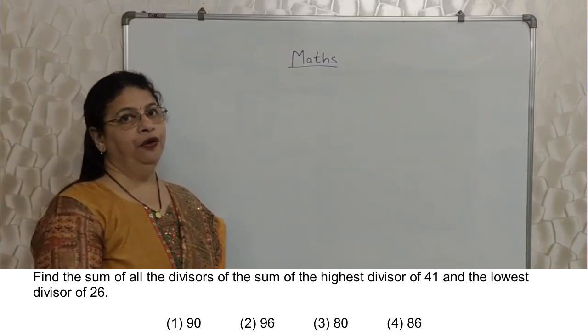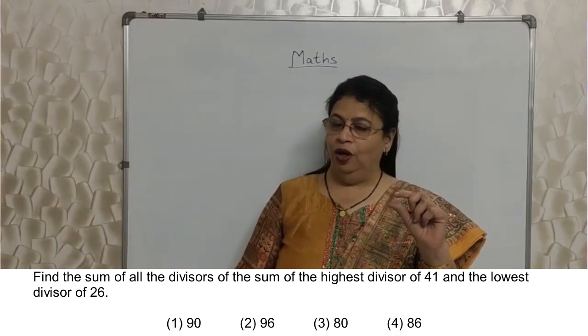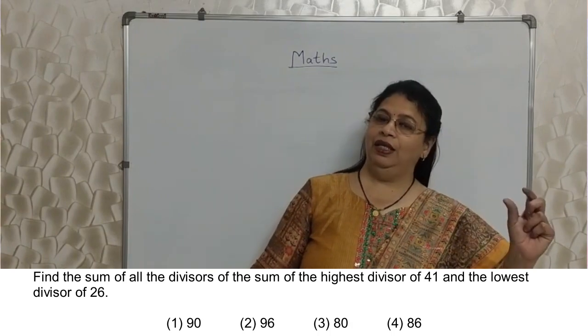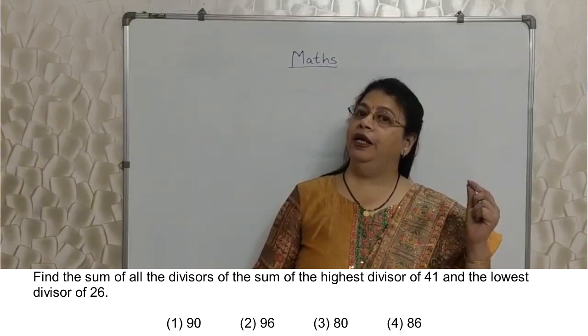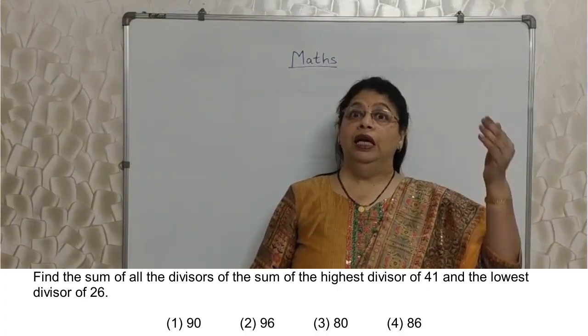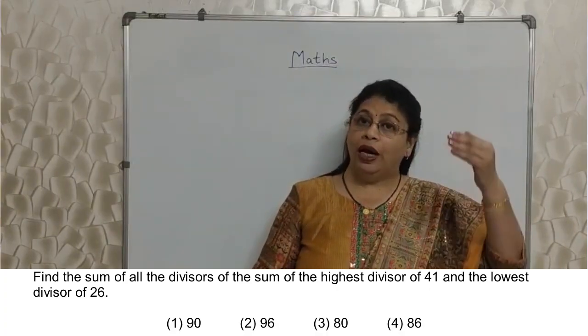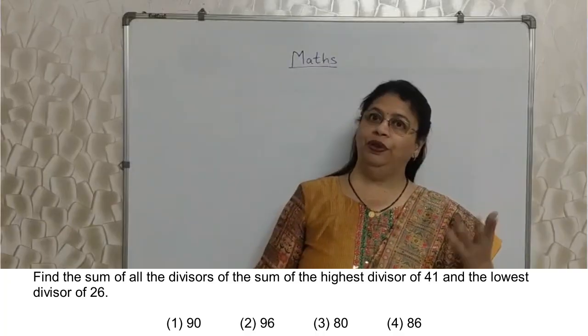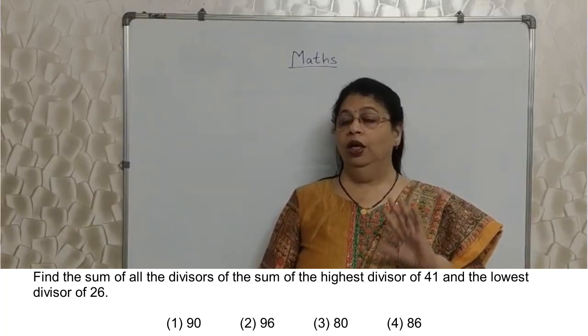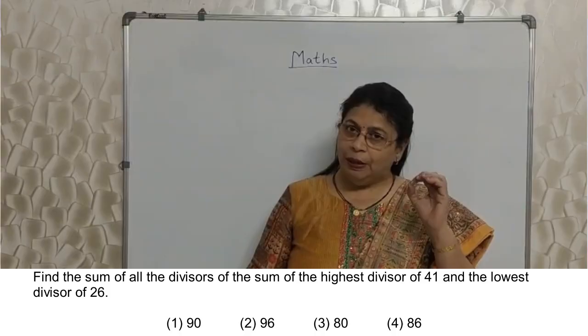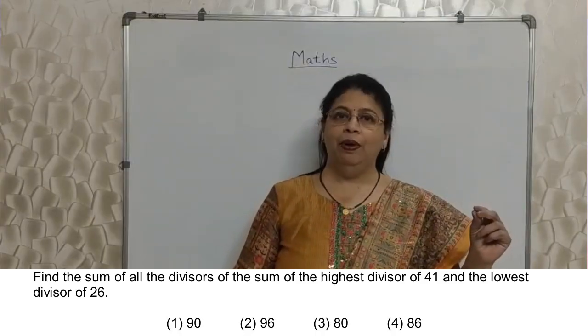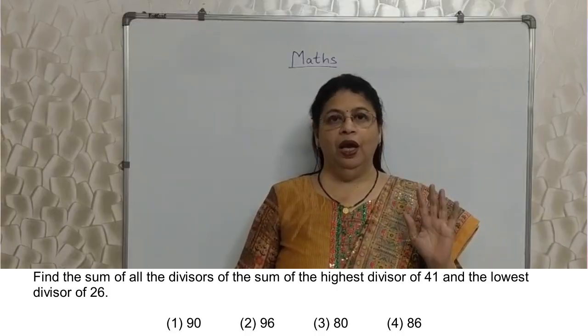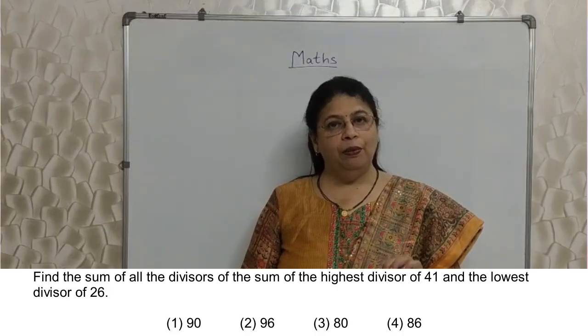Here again, if you don't know the basic rule - what is the highest divisor of any number, what is the lowest divisor of any number - then you may find it difficult. Students literally write down all the divisors to find out which is the smallest, which is the lowest. No, this is based on a simple rule that the biggest divisor of any number is the number itself, and the smallest divisor of any number is always 1.